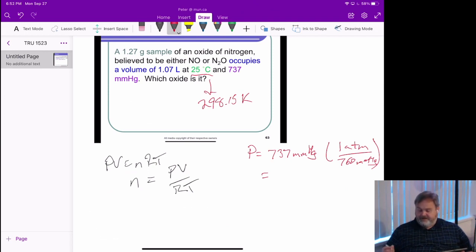We're going to find that this is 0.970 atmospheres. A little less than atmospheric pressure.